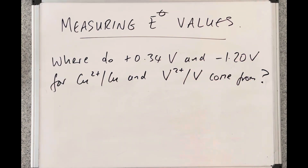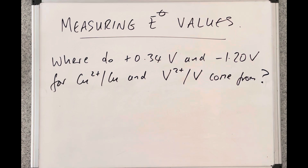In the previous video I looked at what happens when you connect two half cells together, using the copper 2+ copper and vanadium 2+ vanadium half cells to illustrate that. In this video I'm going to look at how the standard electrical potential values for the half cells are actually derived — so where did that plus 0.34 volts and the minus 1.20 volts for those half cells come from?